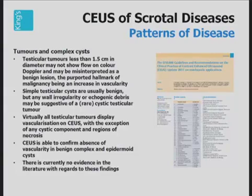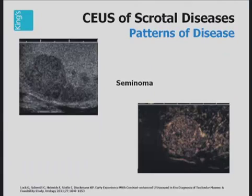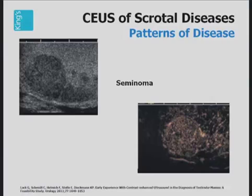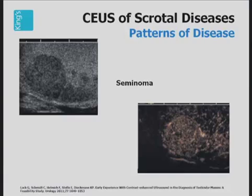There is, however, very little evidence in the literature with regards to these findings, and a lot of this is based on personal experience. This is a large seminoma in the testes measuring over 1.5 centimeters. There is clear demonstration of vascularity in the tumor following the administration of contrast. The parenchyma is less enhanced. Experience shows that this vascularity is very transient, lasting anything between 20 and 30 seconds before the tumor washes out.